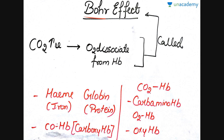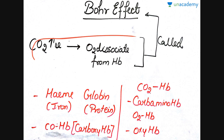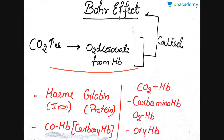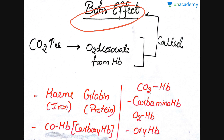Now talking about the Bohr effect. Bohr said that if carbon dioxide increases, then oxygen dissociates from hemoglobin. If this happens, oxygen is easily removed from hemoglobin and becomes easily available to each and every cell for respiration and for the oxidation of metabolism. This particular effect is called the Bohr effect.